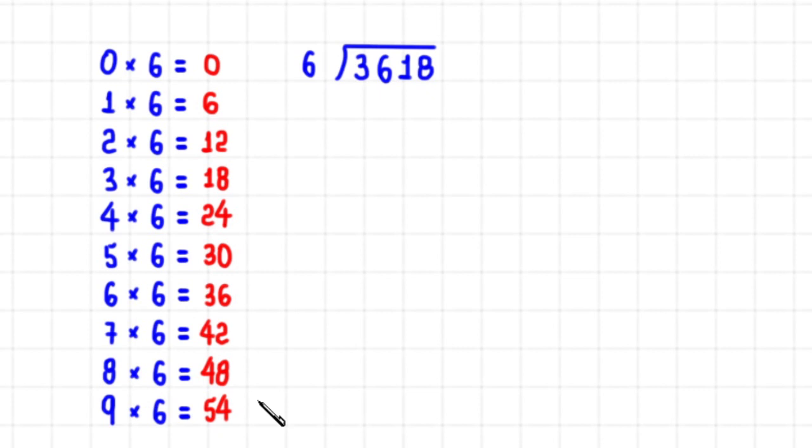So now that we have the multiplication table of 6 available, you will see this is very easy. We do not start with 3 because 3 is smaller than 6, but we can start with 36. How many times does 6 go into 36 without going over? 6 times. So I write 6 here.